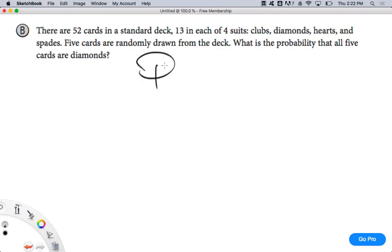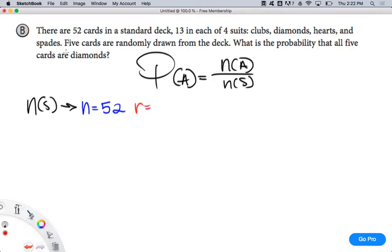Probability of A is NA over NS. Break it up. What's NS? N is what? I'm thinking all my possibilities. 52. What's R? How many cards am I choosing? Five. Very good. Now, if I grab five cards from the deck, does it matter what order they're in? No. I can shuffle them around in my hand. It's still the same hand of cards. So, it's 52C5.